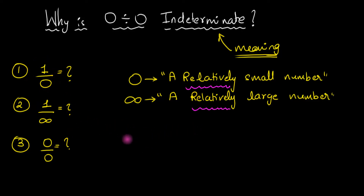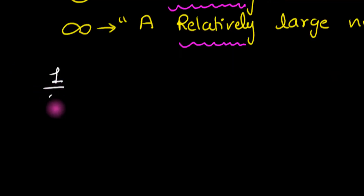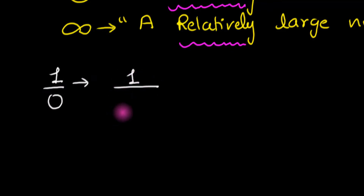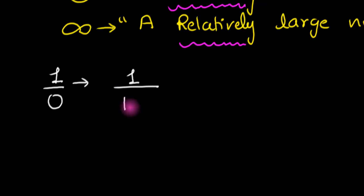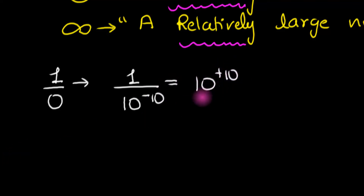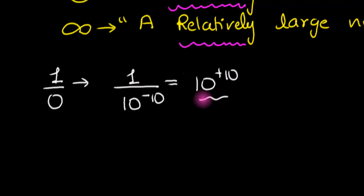We can now understand intuitively what is 1 divided by 0. It's the same as saying 1 divided by a number much smaller than 1. How much smaller? You can take any very small number. Let's go very small and simple — let's do 10 to the minus 10. What do we get? We get 10 to the plus 10, and look at this number — it is way bigger than 1, or in other words, it is a relatively large number — infinity.